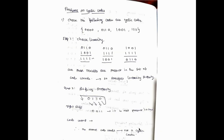Now we are going to solve a problem on cyclic codes. Check whether the following codes are cyclic codes. We have four sets of four-bit codes: 0000, 0110, 1001, and 1111. We need to ensure whether these codes are cyclic codes or not. The first step is to check the linearity — the addition property. We need to take any two sets of codes and add them; the output should also be a code word.